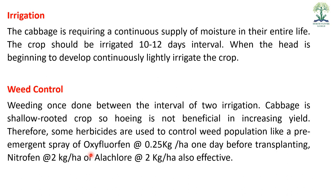Irrigation: Cabbage requires a continuous supply of moisture throughout its life. The crop should be irrigated at 10 to 12 day intervals. Excessive irrigation should be avoided as it causes the head to open up and become non-compact. When the head is beginning to develop, give continuous light irrigation.